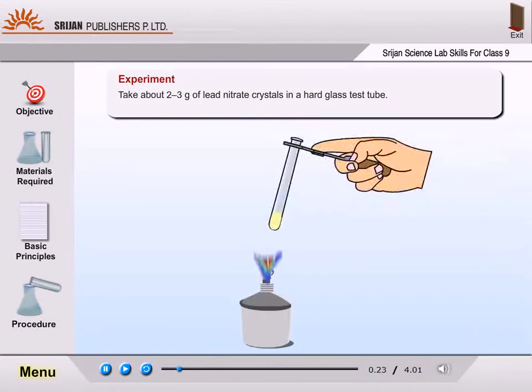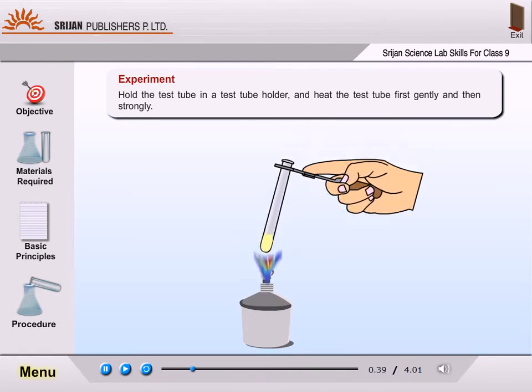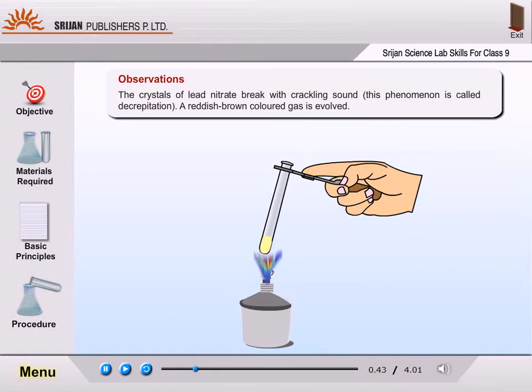Take about 2 to 3 grams of lead nitrate crystals in a hard glass test tube. Hold the test tube in a test tube holder and heat the test tube first gently and then strongly. The crystals of lead nitrate break with a crackling sound. This phenomenon is called decrepitation.